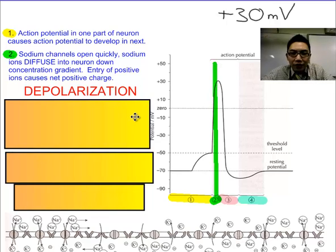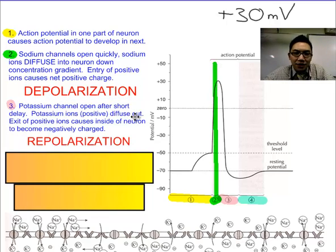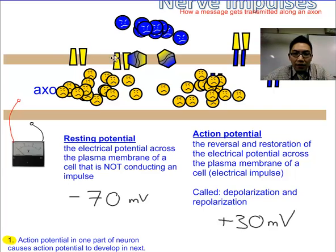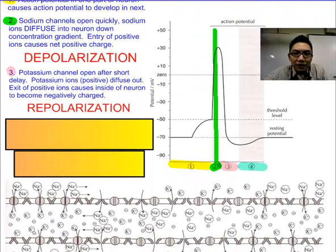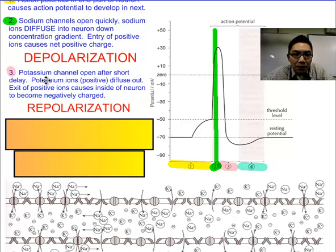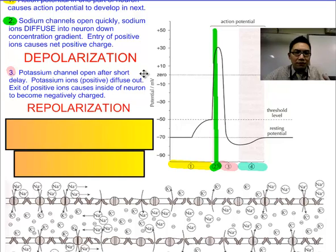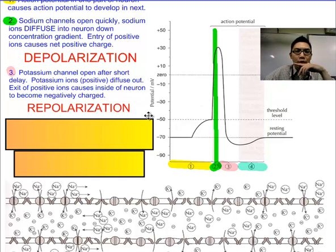Immediately after that, potassium channels now open, allowing all these potassium ions to rush out. We call that repolarization, and that's this pink part coming back down on the graph. Potassium channels open after a short time — and this is important — this is diffusion because it's going down its concentration gradient, back out. We call that repolarization.